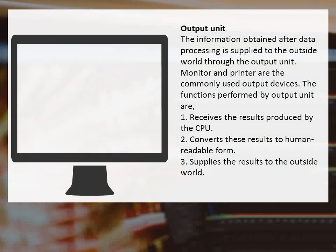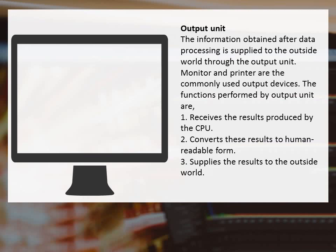The information obtained as a result of processing is displayed to the user through the output unit. The output unit has three functions: to receive the result produced by the CPU, to convert the result into human-readable form, and to supply the result to the external world.